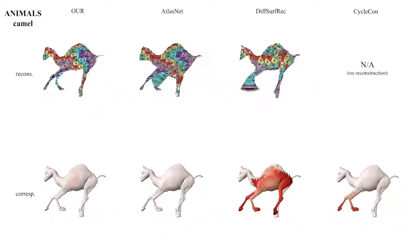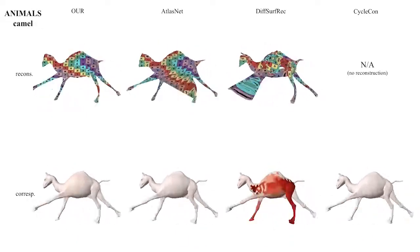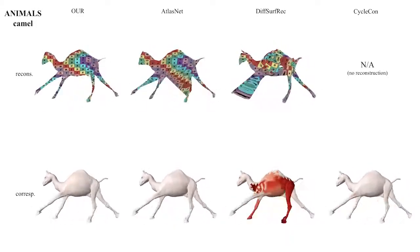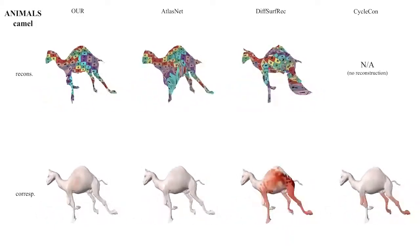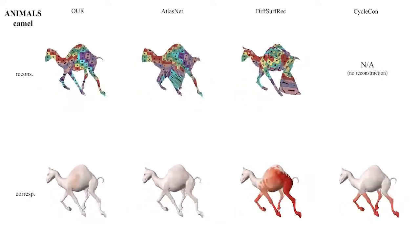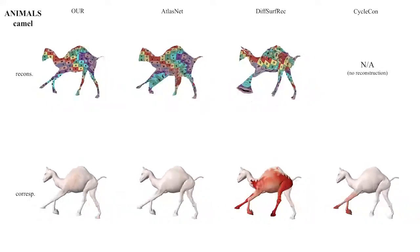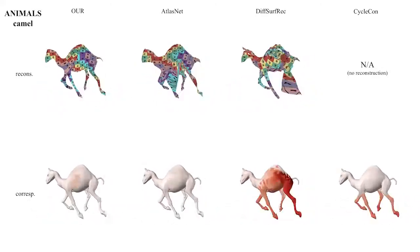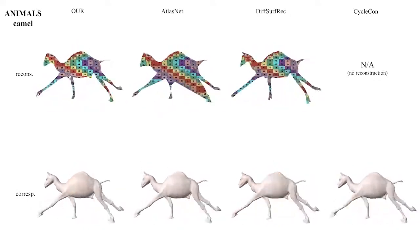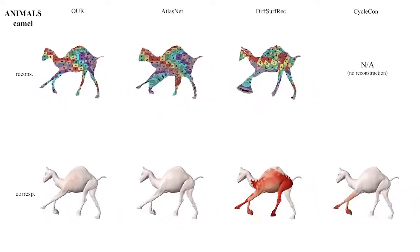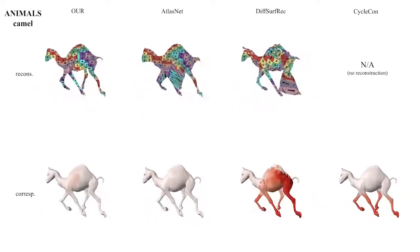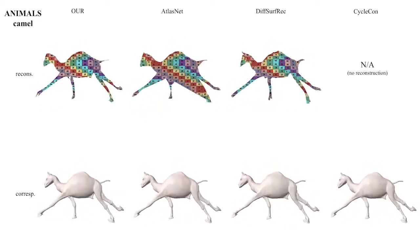In the camel's case, AtlasNet and DSR produce erroneous surface reconstruction, which is avoided in our case due to temporal coherence. DSR and CycleCon again swap the legs of the camel. Our method's correspondence accuracy outperforms AtlasNet by a small margin, while our reconstruction quality is much higher, again showing that temporal coherence also improves surface reconstruction accuracy.